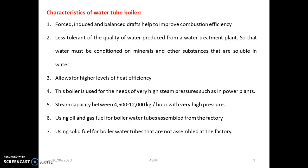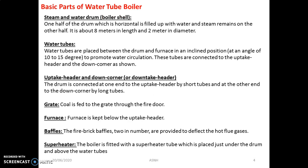Let us look at the basic parts of the water tube boiler. The first is the steam and water drum, also called the shell. It is about 8 meters in length and 2 meters in diameter, made of stainless steel material which is corrosion resistant. The water tubes are also made of corrosion-resistant materials — sometimes mild steel and sometimes stainless steel are used. The tubes are inclined at an angle of 10 to 15 degrees.